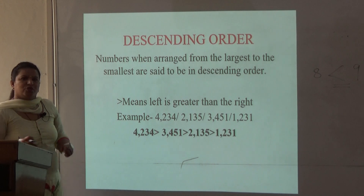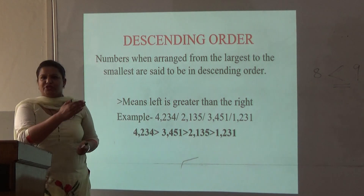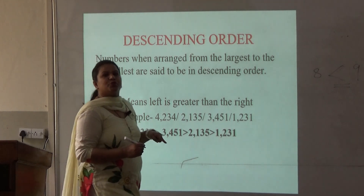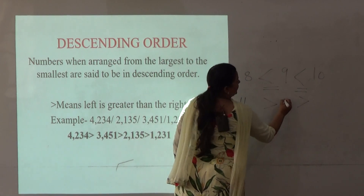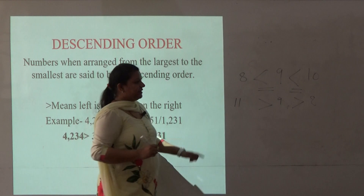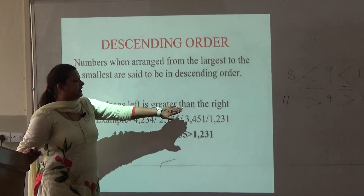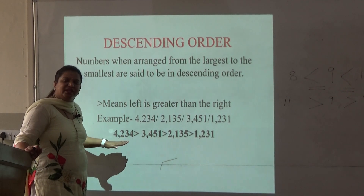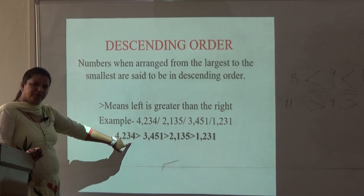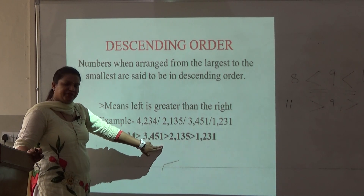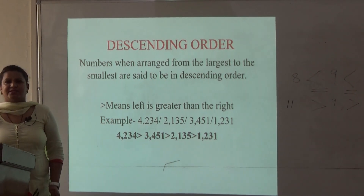Let's go to descending order. Descending order is just the opposite of ascending order, where we arrange the numbers from largest to the smallest. The symbol we use opens the mouth towards the bigger number, meaning the left side number is greater than the right side. Using the same example: 4,234 is the greatest, then comes 3,451, then 2,135, and 1,231. So this is your descending order.